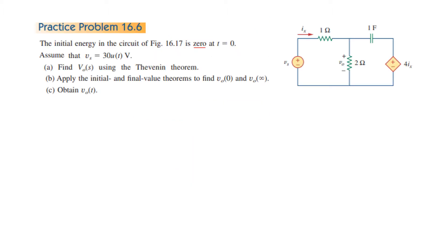The circuit has one capacitor, two resistors, an independent voltage source, and a dependent voltage source. The initial energy in the circuit is zero, so the capacitor energy is initially zero. V_s is 30u(t). We have to find V_o(s) in the Laplace domain using Thevenin's theorem, then apply the initial and final value theorems to find v(0) and v(∞).